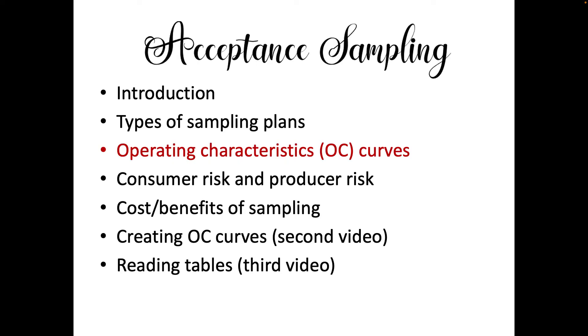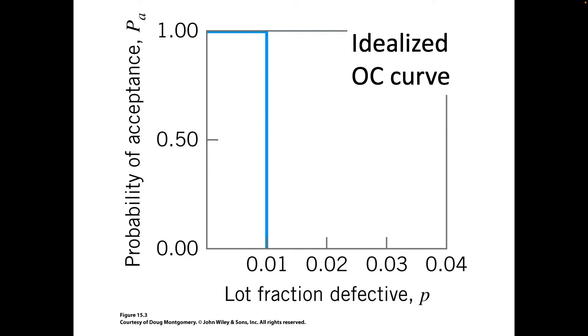One of the key things in acceptance sampling is looking at operating characteristic curves. These curves help us decide based on the lot what is the probability of acceptance. This is an idealized chart. The idea is the percent defective within an item is what we're trying to detect. If we have a curve that looks like this that's perfectly discriminating, meaning that if it was half a percent defective there was a hundred percent chance that we will accept it. If it's two percent defective then there's zero percent chance that we would accept it. This would be great if we had curves like this but we don't have this unless we do 100% sampling.